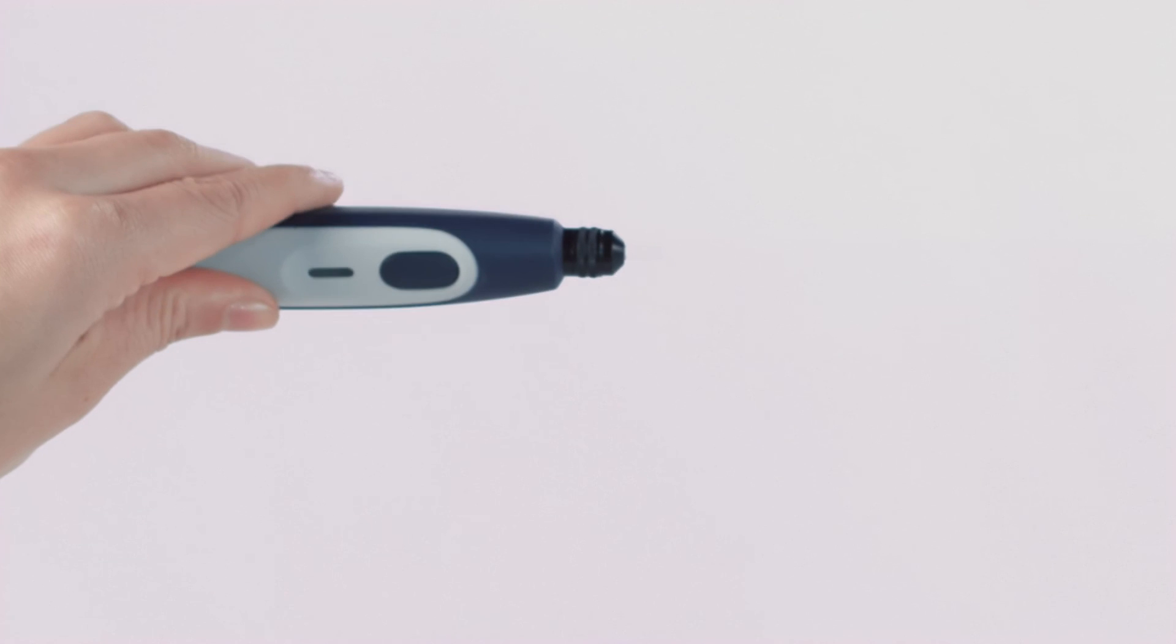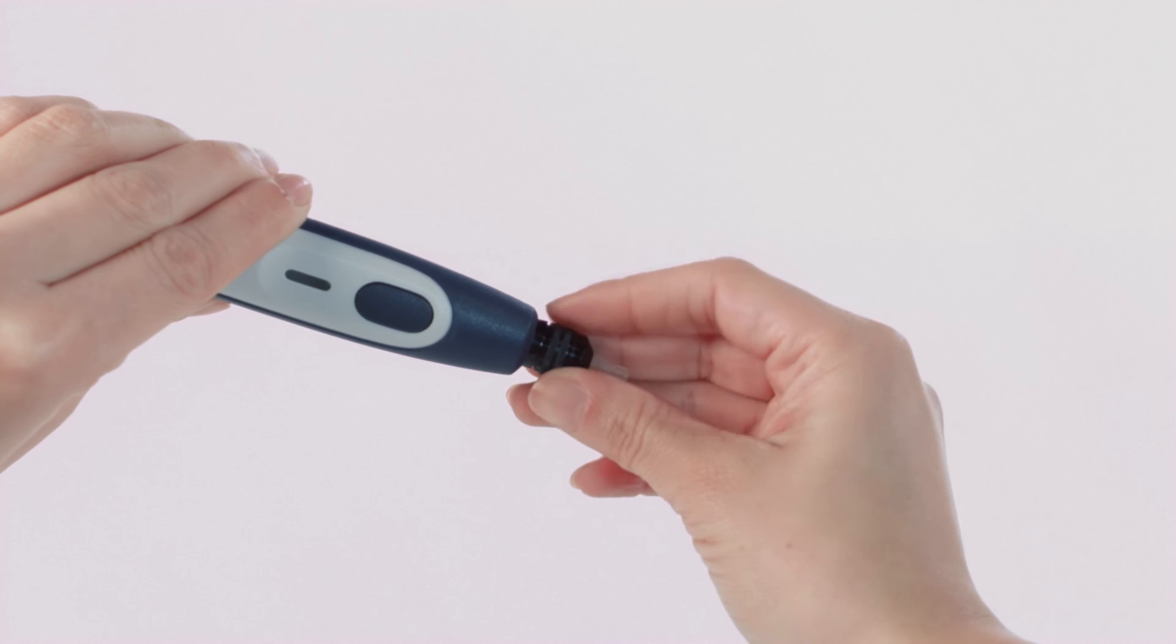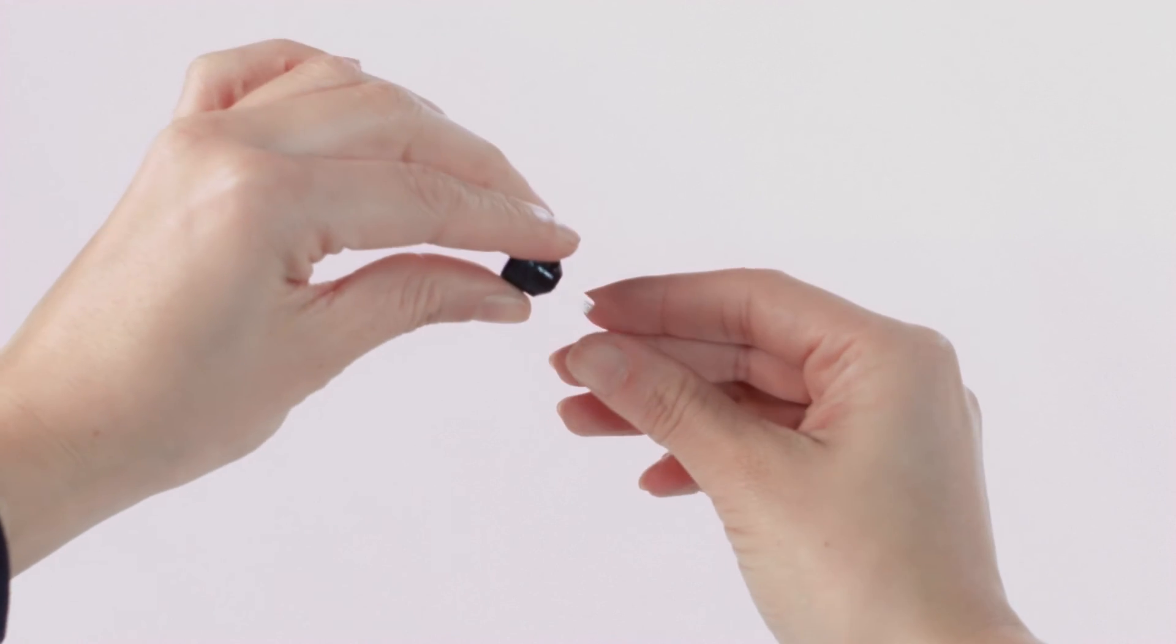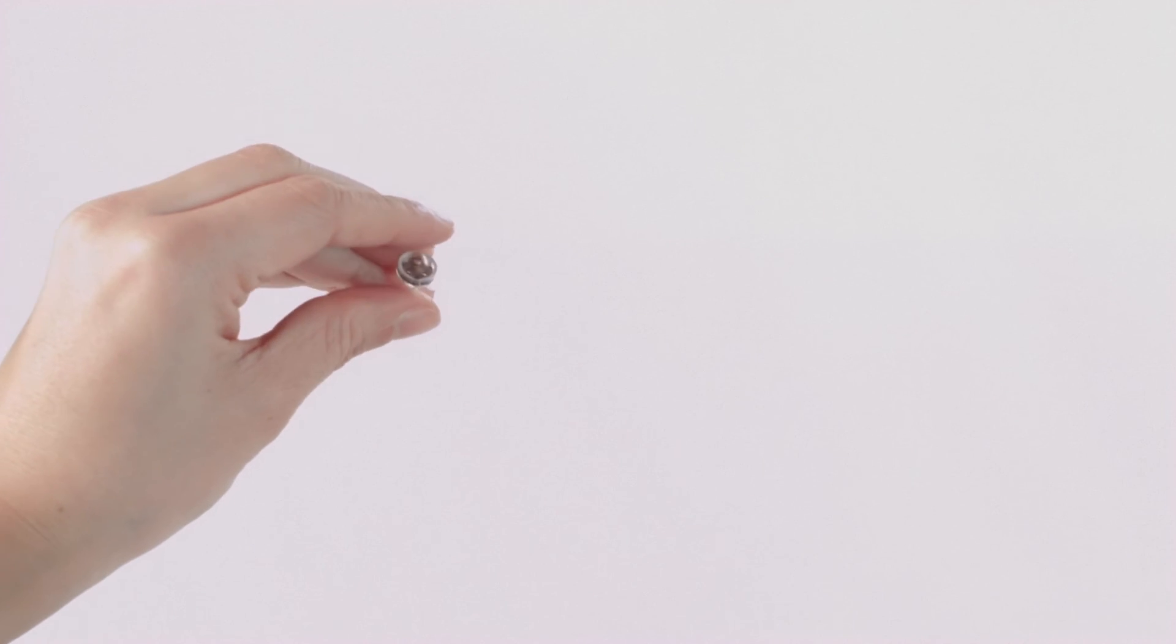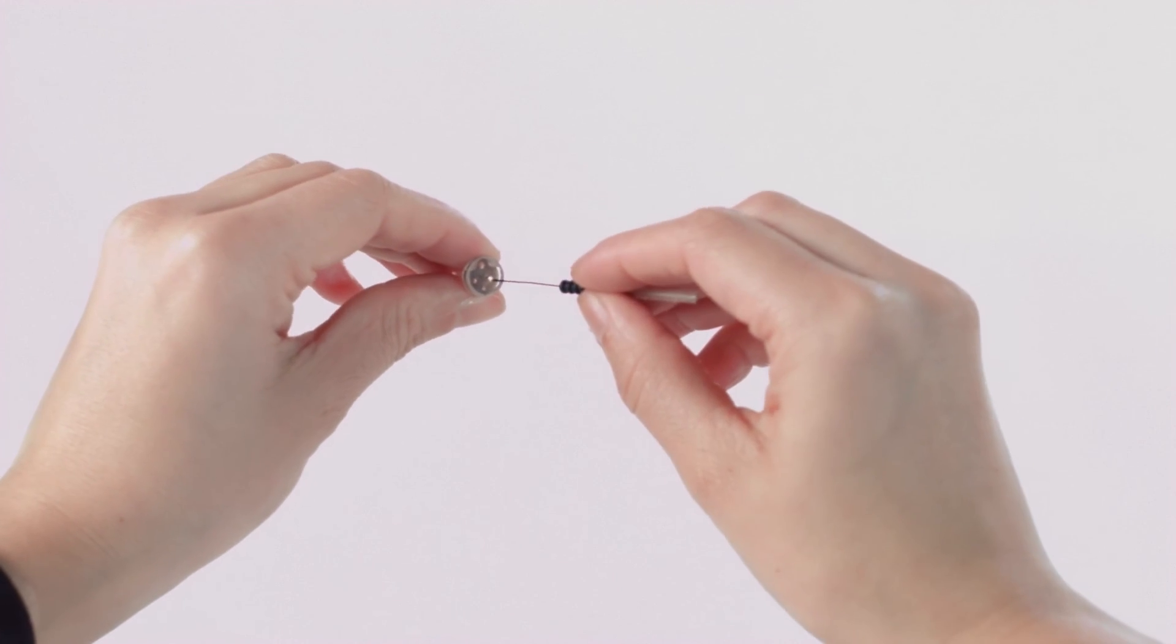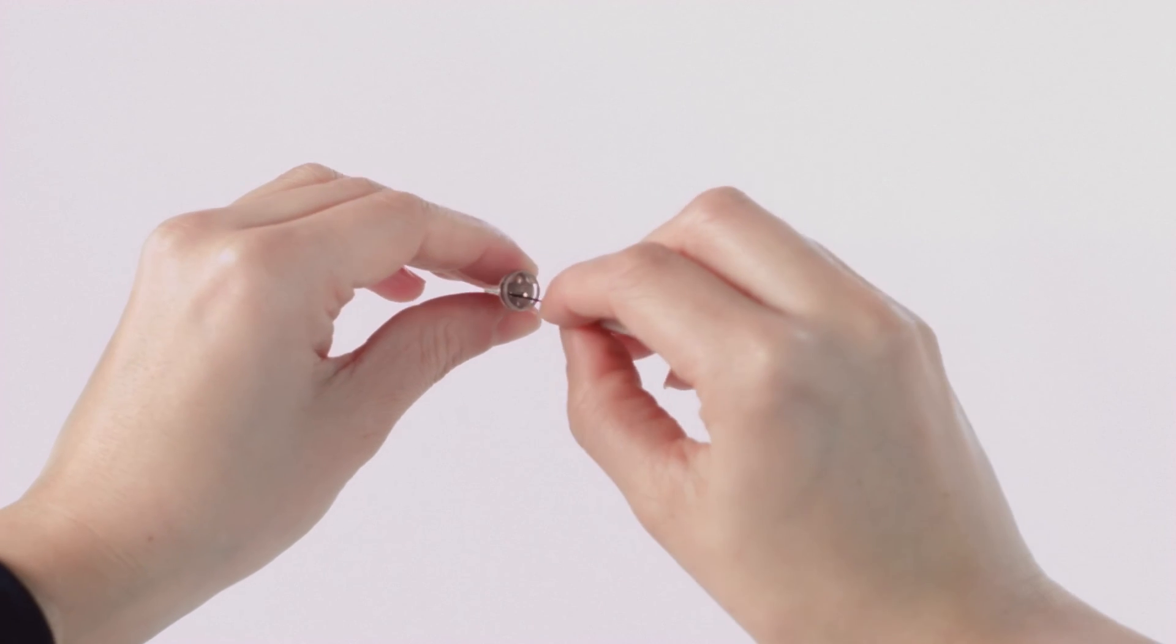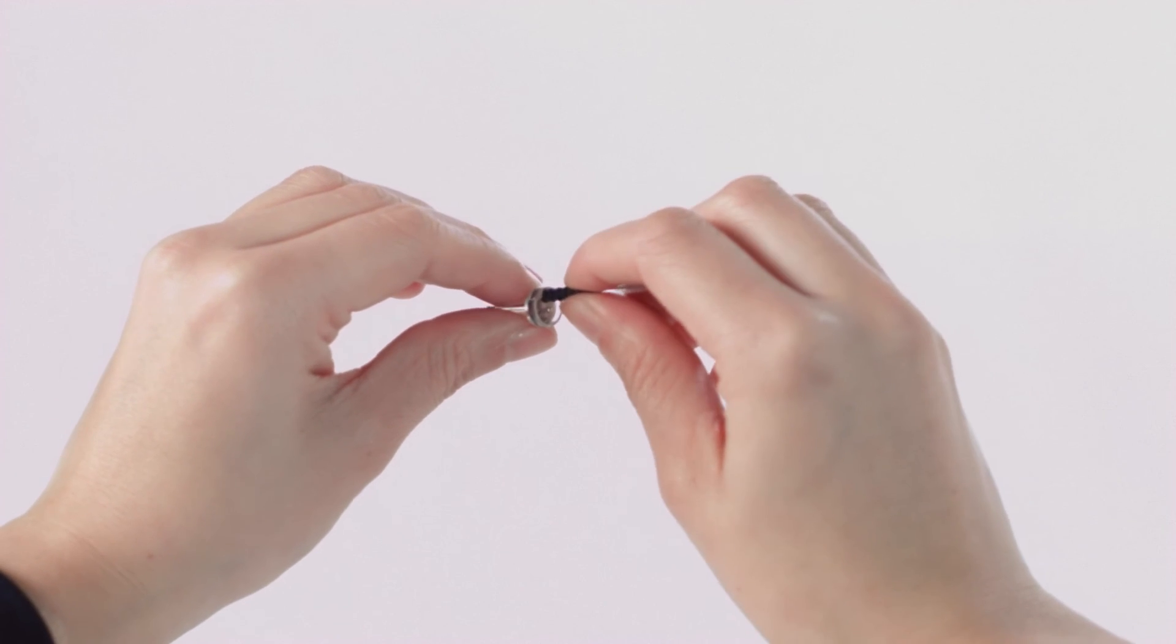To clean the probe tip, first unscrew the probe cap by turning it in a counter-clockwise direction. Never clean the probe tip while the tip is still attached to the probe. Take the plastic probe tip out of the probe and take the cleaning tool apart to find the thin brush and thin rigid plastic cord. Use the plastic cord or brush to push debris out of the probe tip. Always enter the probe tip from the rear to avoid accumulation of debris inside the vents.